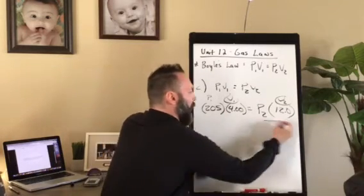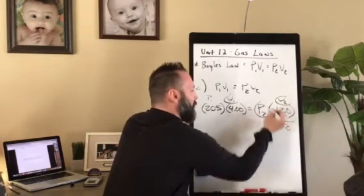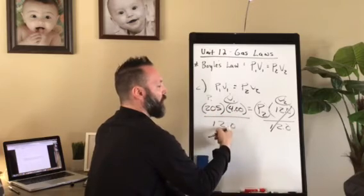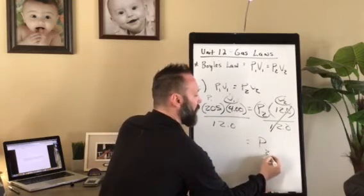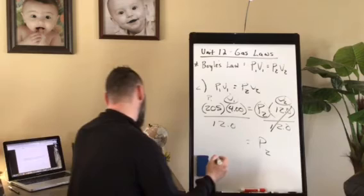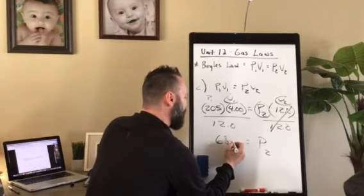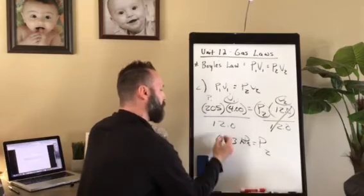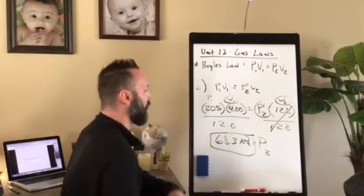So we're going to divide by 12 to isolate P2. 205 times 4 divided by 12 will be equal to your pressure. And you're going to get an answer of 68.3 kPa is your final answer.